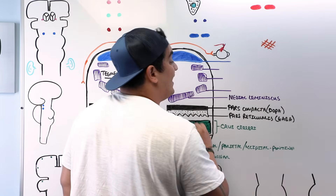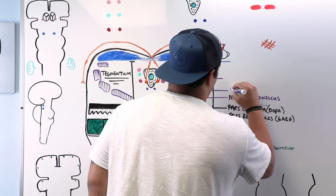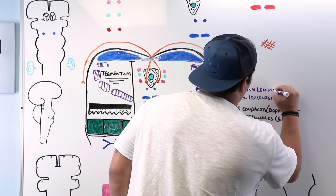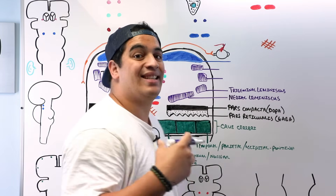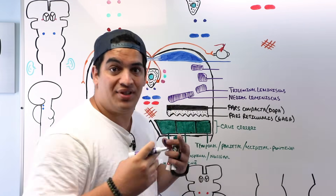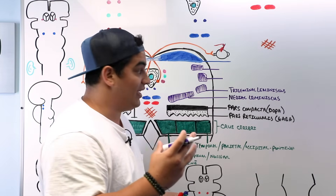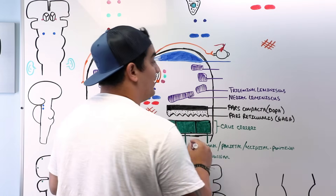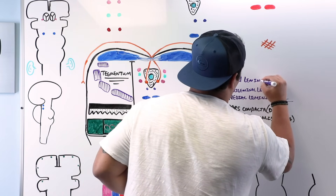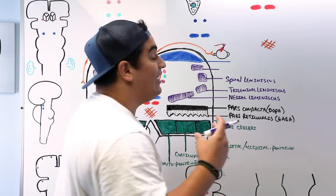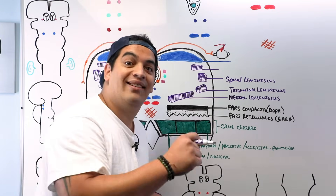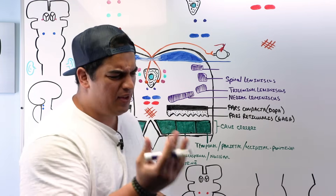Going a bit more dorsally is the trigeminal lemniscus, which carries proprioceptive, touch, and pressure sensations from the face. Further back is the spinal lemniscus, which carries ascending fibers for pain, temperature, crude touch, and pressure from the anterolateral spinothalamic tract and the spinotectal pathway.